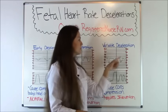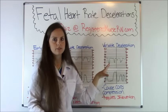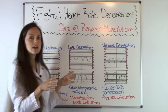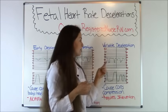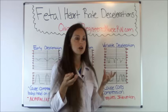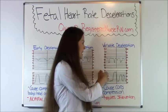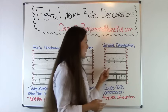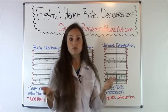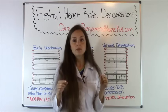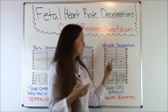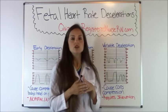Variable decelerations look very different from the other types — they're not uniform. Baby's heart rate responds at different times because the cause is cord compression: the cord may be prolapsed, wrapped around the baby's neck, or being compressed, decreasing blood flow to the baby. The heart rate is all over the place — it dips down, goes up, and is just scattered. To remember variable, the baby's heart rate forms little V shapes — and variable starts with V. That's how you remember variable decelerations.